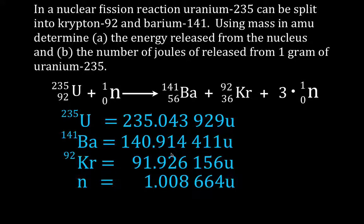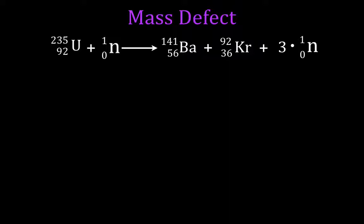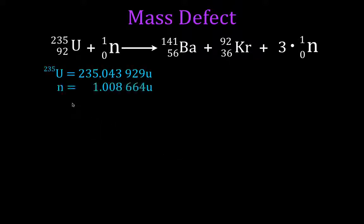In the next slide, we're just going to add them up. On the left-hand side, we have uranium-235 and a neutron. We add up the masses in atomic mass units for the uranium and the neutron, and we get that the total mass on the left-hand side is 236.052593 atomic mass units.